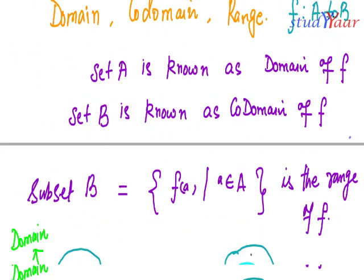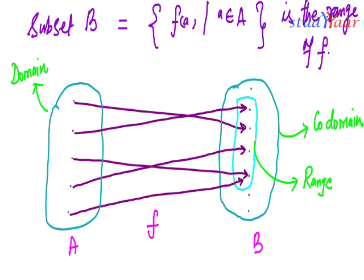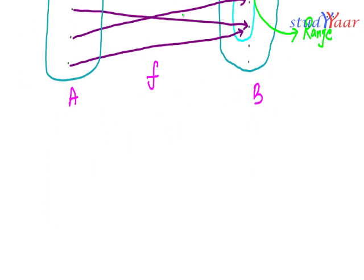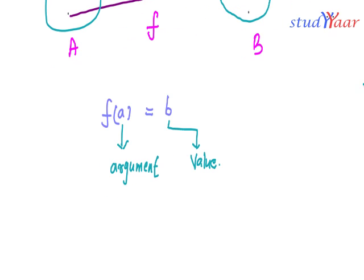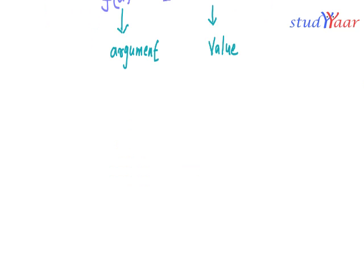One more thing: if f(a) equals b, then a is known as the argument and b is known as the value. This is another piece of terminology that you should understand and keep in mind.